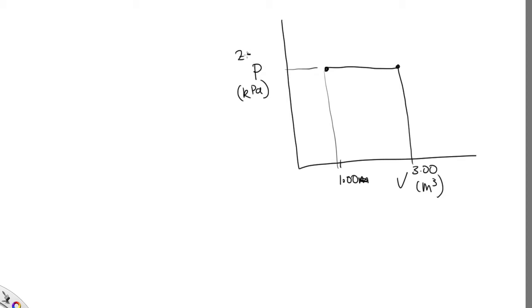To answer this question, we should start by drawing a PV plot. We're told that it's an expansion from 1 meters cubed to 3 meters cubed at a constant pressure of 2.5